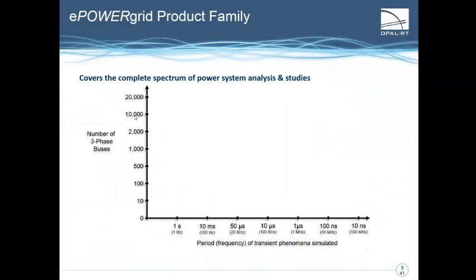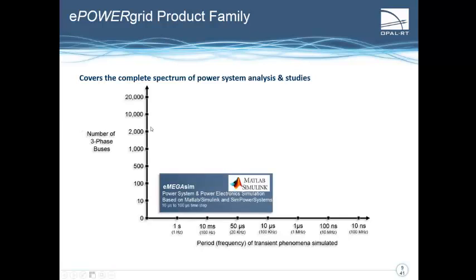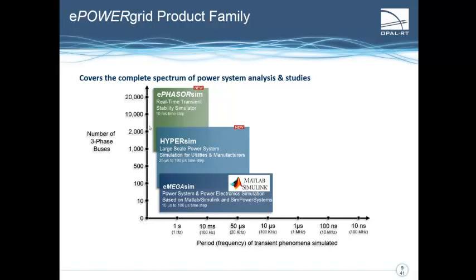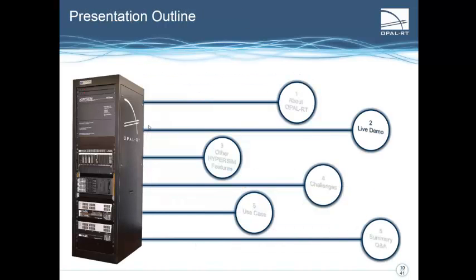What makes Opal RT unique is, among other things, our fast innovation. We have developed for that our ePowerGrid product family, which covers the complete spectrum of power system analysis and studies. eMegaSim was our first solution when the company was founded. Then we extended to HyperSim, which is better for simulating large power systems. We developed ePhasorSim for very large networks of up to 20,000 nodes, and for very fast simulation we developed eFPGASim that allows very fast switching frequencies without you having to program the FPGA yourself. And now, it's time for the live demo.